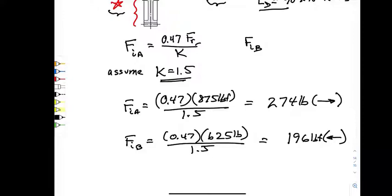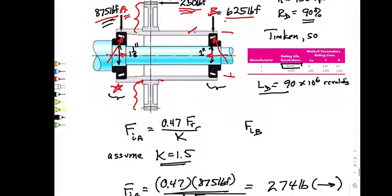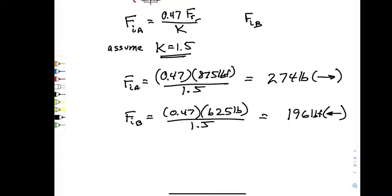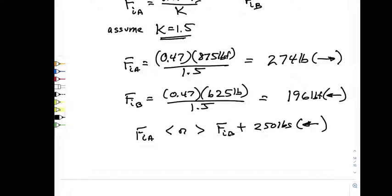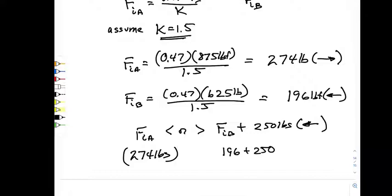The radial loads induce axial loads at the bearings. This is an interesting case because the bearings are indirect mounted: if the load were applied through the shaft, they would generate tensile loads; instead, applied through the outer housing, they induce compressive loads in the shaft. We now determine whether the induced axial load at A (274 lb) is less than the induced axial load at B plus the external axial load (196 + 250 = 446 lb). Since 274 is less than 446, we proceed accordingly.